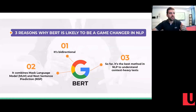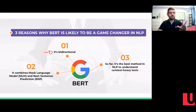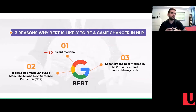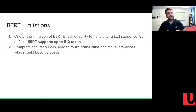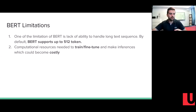Why is BERT a game changer in NLP? BERT is bidirectional, which is really useful for masking as explained. It combines two tasks in its pre-training stage — masked language modeling and next sentence prediction — and is the best method in NLP so far because it can understand context-heavy text. However, BERT has limitations: it can only handle sequences up to 512 tokens, and the computational resources required for training can become very costly.